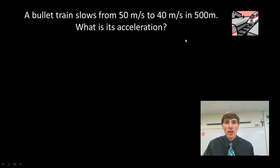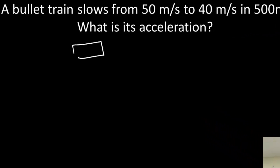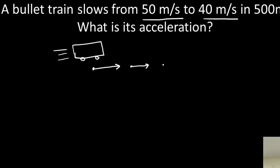The first question says: a bullet train slows down from 50 meters per second to 40 meters per second in 500 meters. What is its acceleration? It may be helpful to draw out what's going on — a little train speeding along, starting at 50 meters per second and slowing to 40 meters per second. You may want to draw a little motion map showing it slowing down over 500 meters.